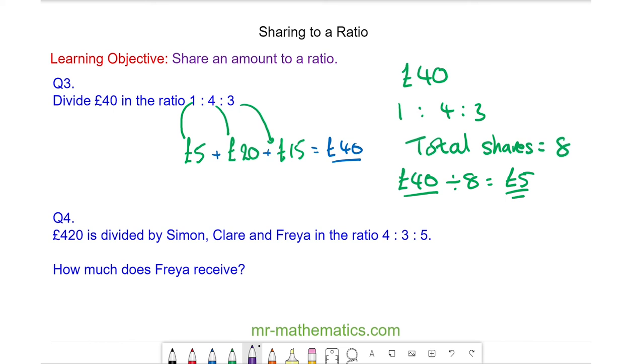Okay, for question four. £420 is divided by Simon, Clare, and Freya in the ratio of four to three to five. How much does Freya receive?